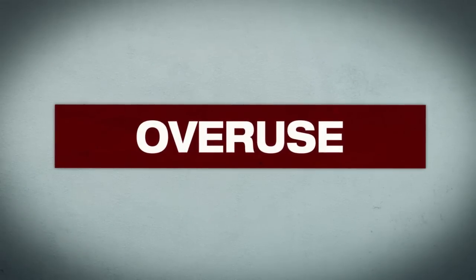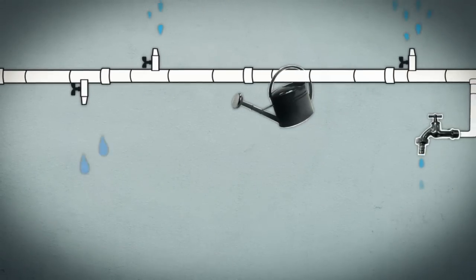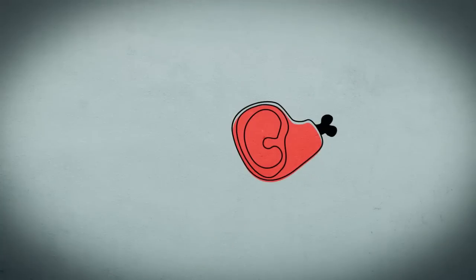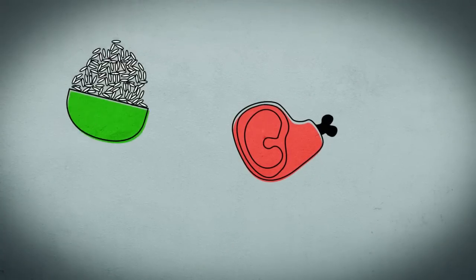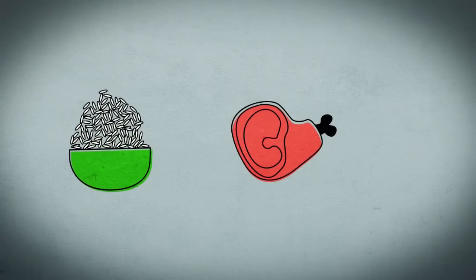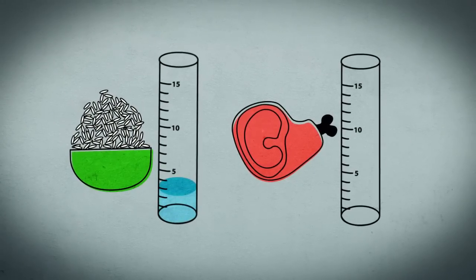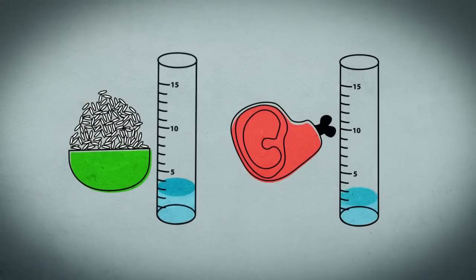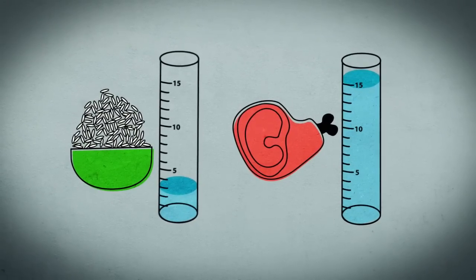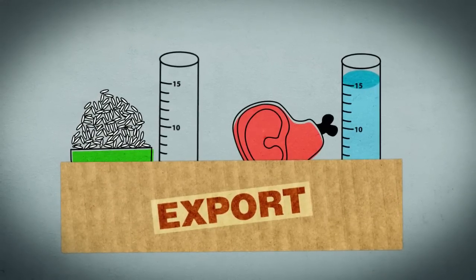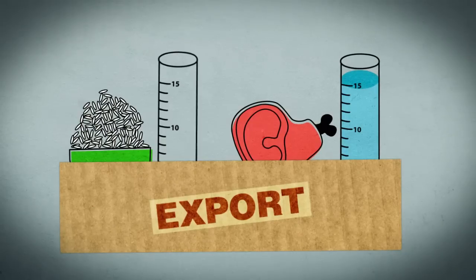Three main problems can be observed. First, the overuse of water through inefficient irrigation systems and waste, population growth, and changing consumer behavior. People are eating more and more meat. Compared to vegetable products, animal products require much more water to produce — 2,500 liters of water are required to grow a kilogram of rice, while one kilogram of beef requires 15,000 liters. Such water-intensive products are often exported from developing and emerging countries to industrialized countries.